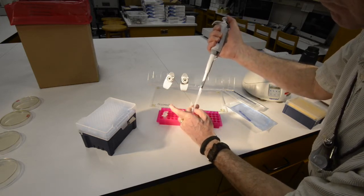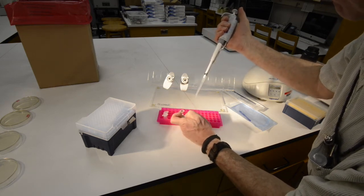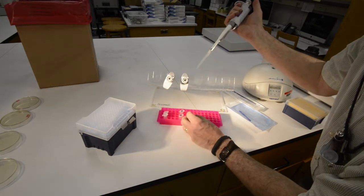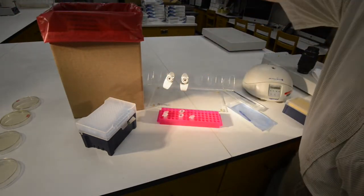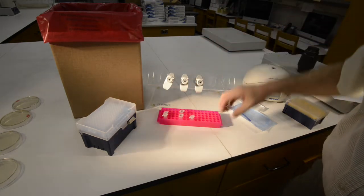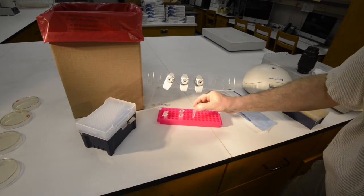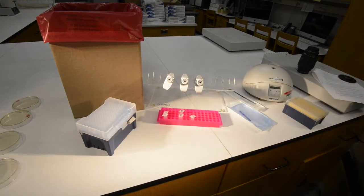So we add the sterile saline to that microfuge tube with the beetle, and then dispose of your used pipette tip in an autoclave bag. Now we're ready to actually grind the beetle in that sterile saline.